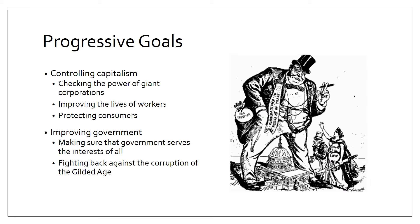So what exactly did the progressives want? First, they wanted to control capitalism — to have government step in and control the power of giant corporations. They also wanted the government to improve the lives of workers and protect consumers from high prices and low-quality goods. They wanted to hold big corporations and trusts responsible. They also wanted to improve the quality of government by making sure it worked for everybody, not just the rich, and by eliminating corruption.